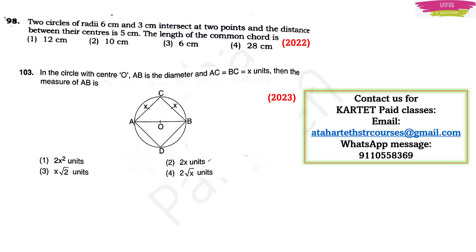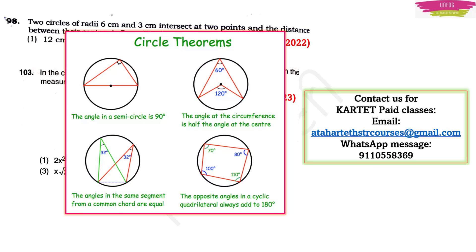In 2022 and 2023, I found questions from the chapter on circles. When I talk about this chapter, I always give some very important points before discussing anything. There are a few key theorems. First: the angle in a semicircle is 90 degrees. When the angle is formed in a semicircle, it is always 90 degrees. Second: the angle at the circumference is half the angle at the center — for example, 60 degrees at the circumference means 120 degrees at the center.